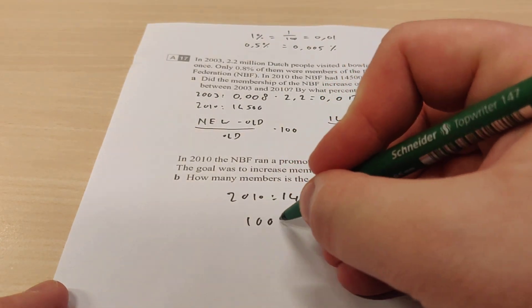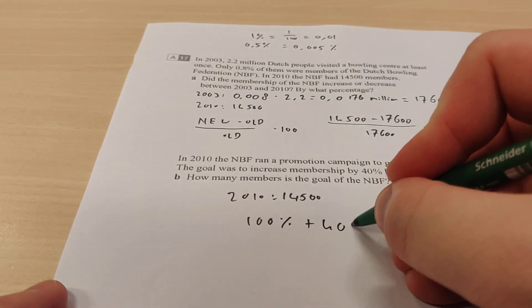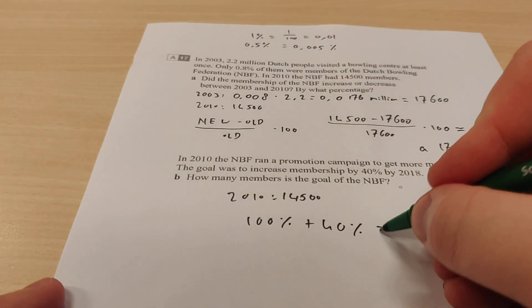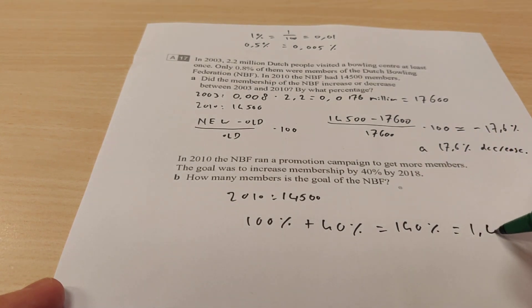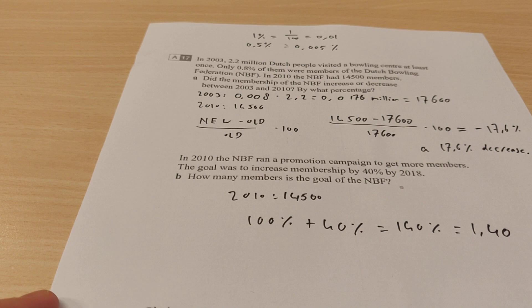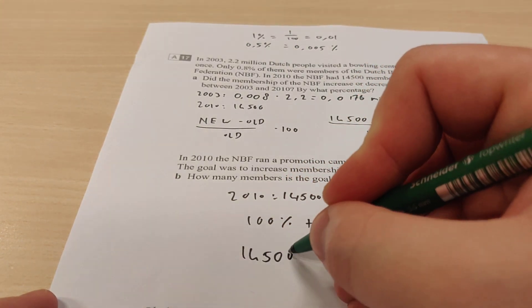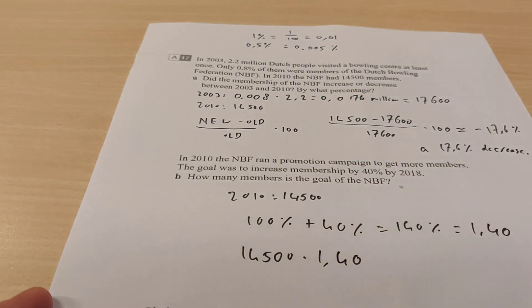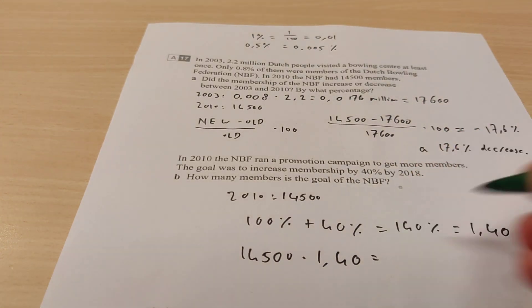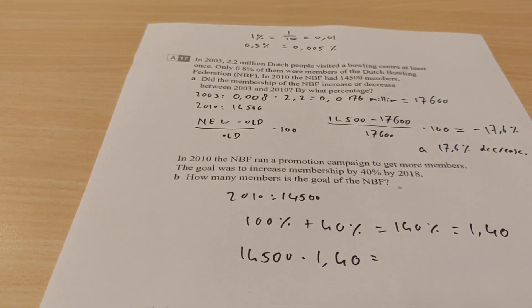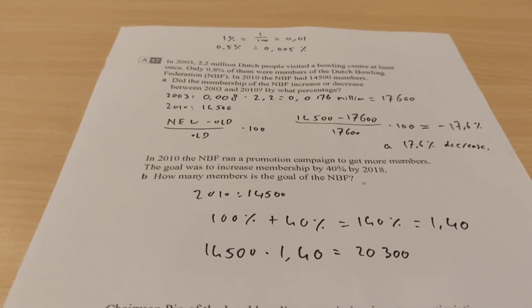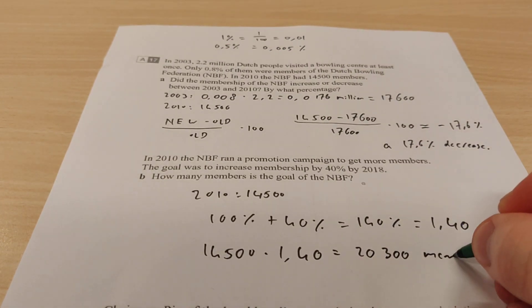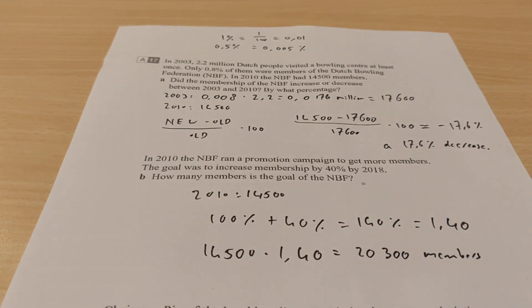So that means that we take 100% and we add 40% to it. Because then you have a 40% increase. It's 140%. So the number that we multiply with is 1.40. So we're going to take the 14,500 and we're going to multiply that with 1.40. And then let's see what we get. 14,500 times 1.40 is 20,300 members. And that's the answer for B.